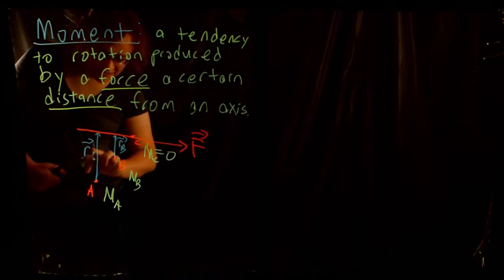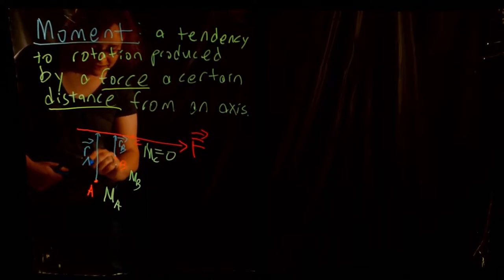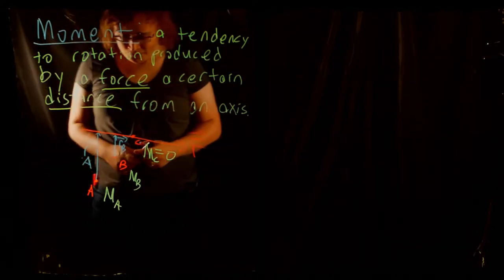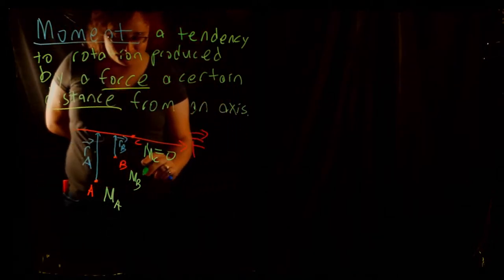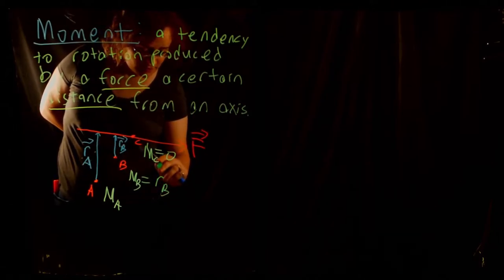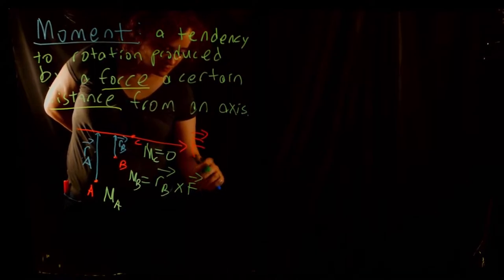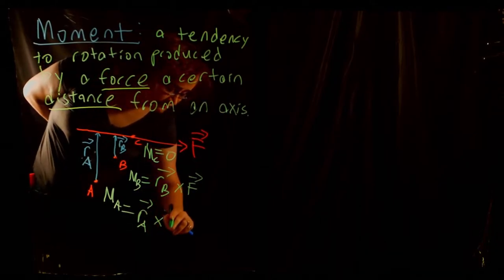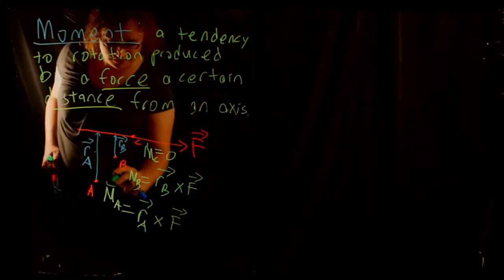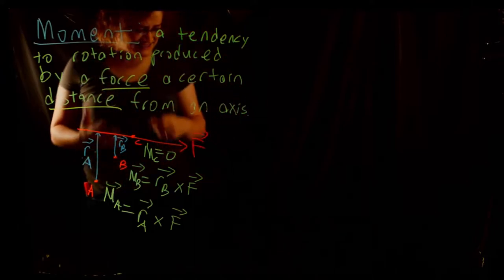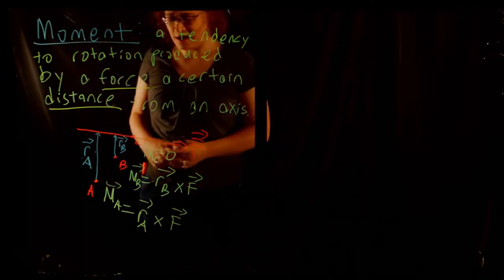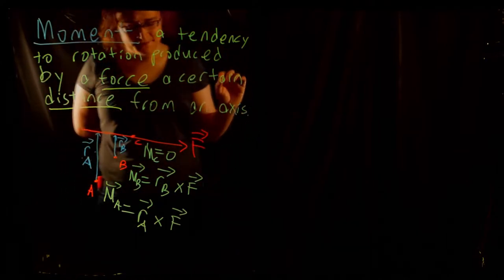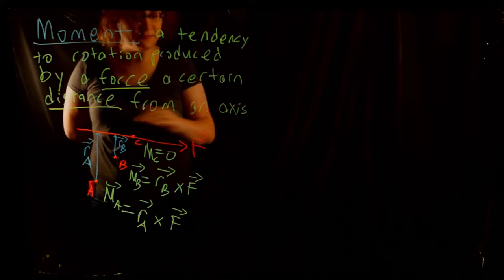The moment at point B would be some value computed with a cross product, and point A would be another moment. To calculate moments, we consider moment arms, designated with an R vector in statics, where R goes from the point in question to any point along the force's line of action. So MB equals RB cross F, and MA equals RA cross F. That gives you a moment vector. This is basic statics — more theoretical than what we'll be doing in structural analysis.